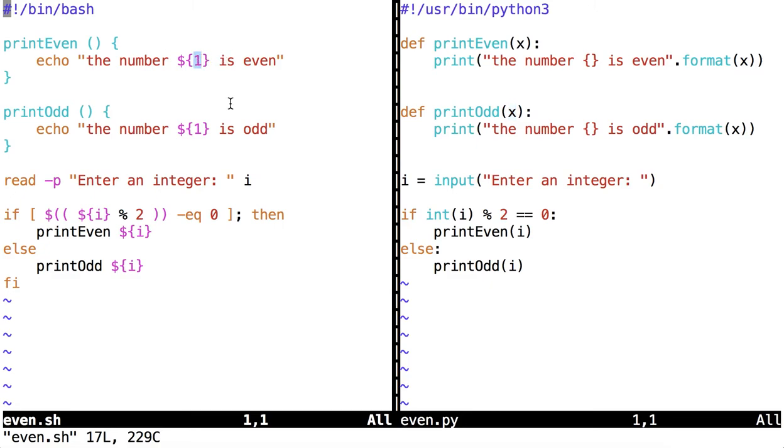This argument expansion inside print even, it's expanding the first argument given to print even. So let's come down here to the code. The first argument given to print even is the value stored at the variable i.